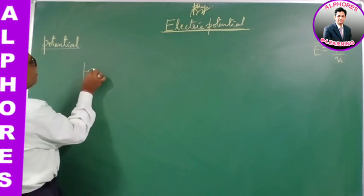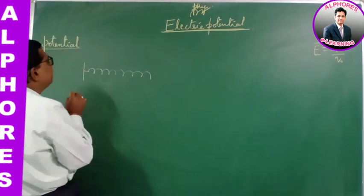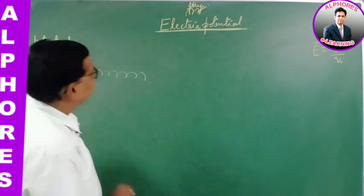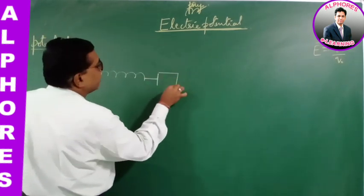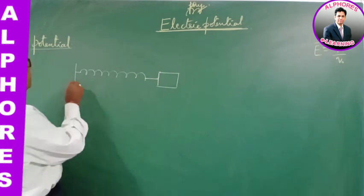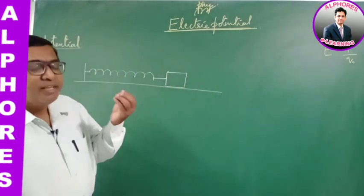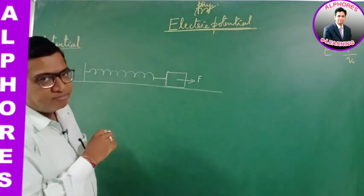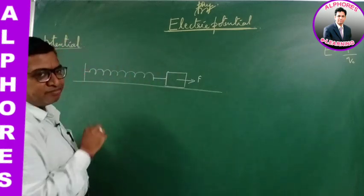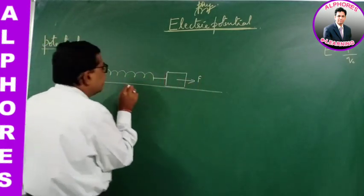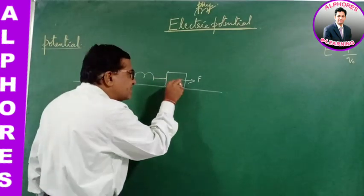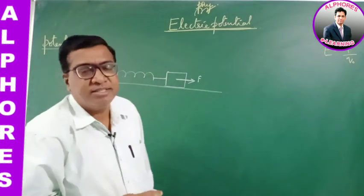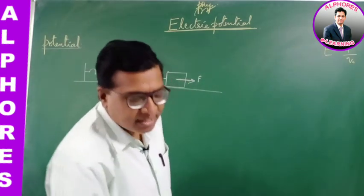Suppose I consider a spring. Imagine there is a spring — this is the unextended length of the spring. When I connect a body to the spring on a smooth horizontal surface, and an external agent applies force F on the body and pulls it away, the spring is stretched. In pulling this, the external agent does work, because force is applied through a displacement. Work done = F·S.